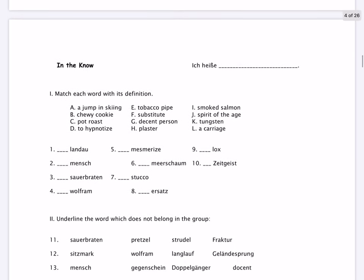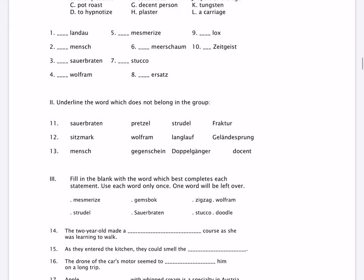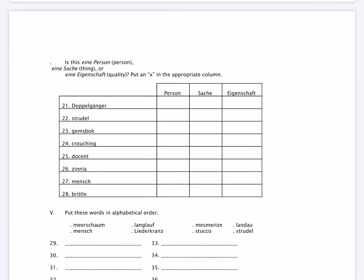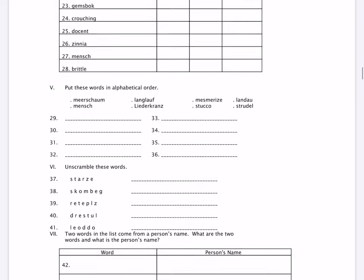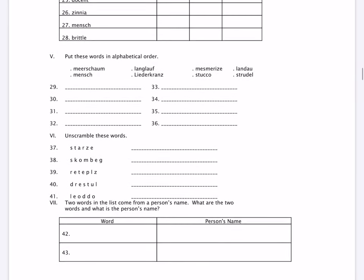Now, here's where you start with the activities. You have a couple things here. As you can see, in section one, for example, you're going to match each word with its definition. You have the English definitions there, but down below you have the German words, so make sure you put the letter on those lines. Each of these activities in section two and section three, and further on down to section four and five — you see that there are a lot of different types of activities. They are not particularly difficult, but you do need to read the instructions in order to do these activities.